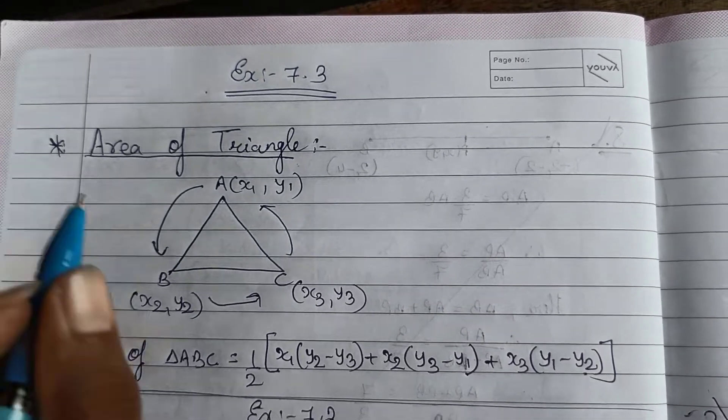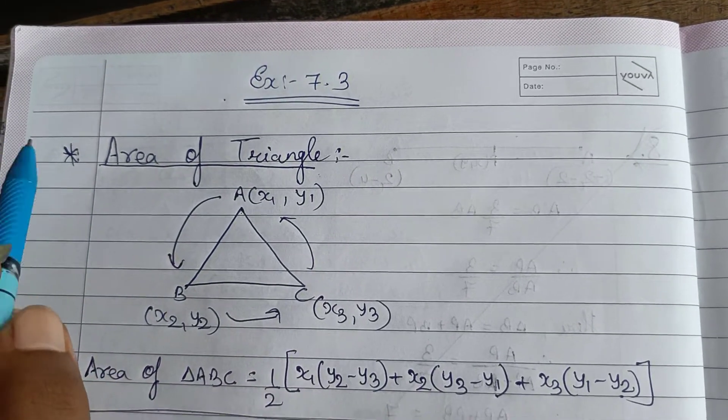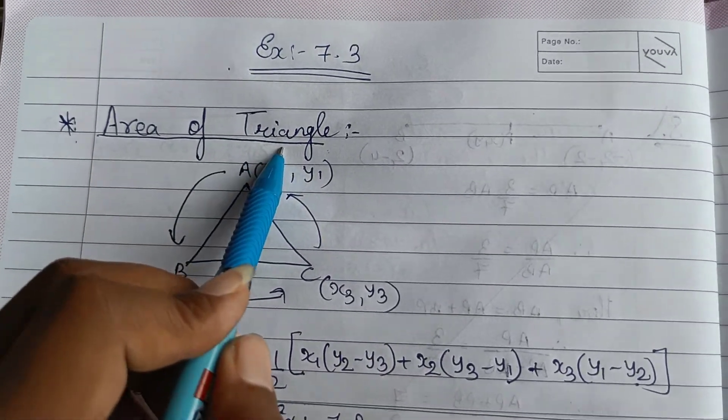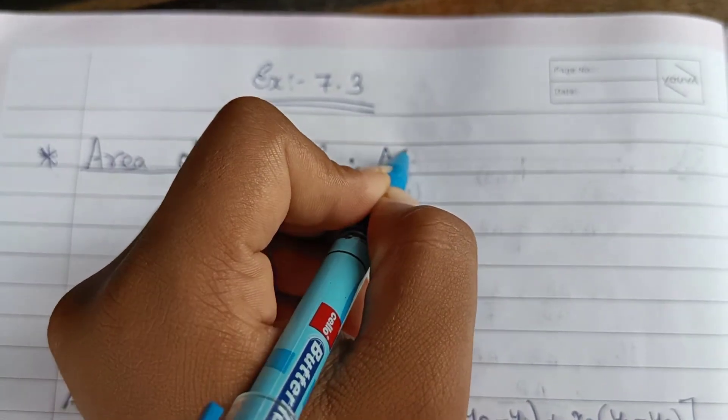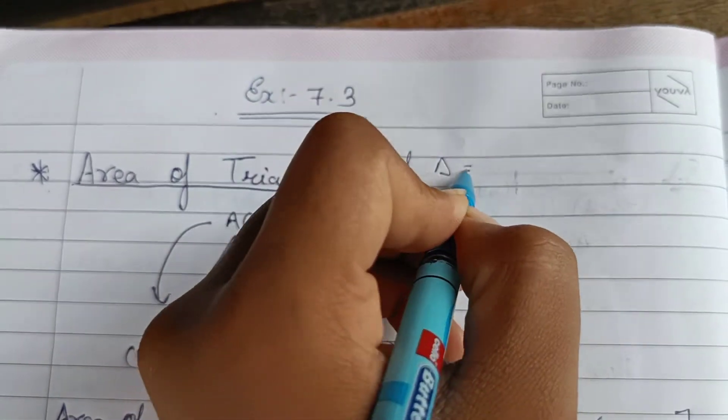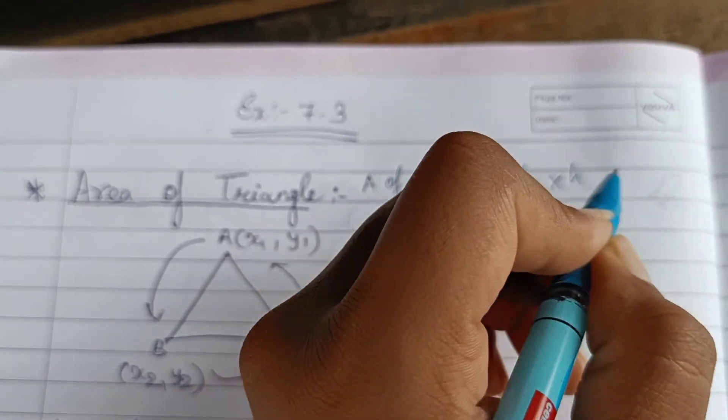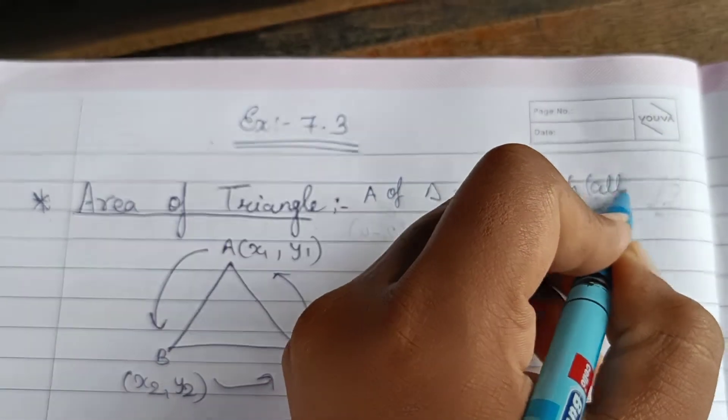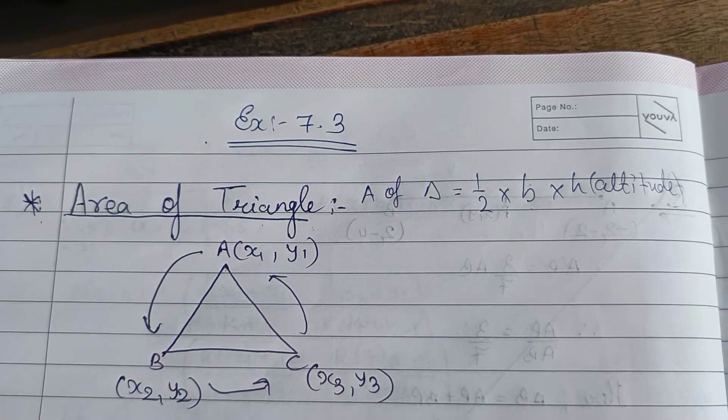Good morning students. Starting with exercise 7.3 of your chapter number 7, that is coordinate geometry. Your topic is area of triangle. Now see, you had come across with area of triangle and you know what is area of triangle. Area of triangle is half into base multiplied by height or altitude. Okay, this is your area of triangle.